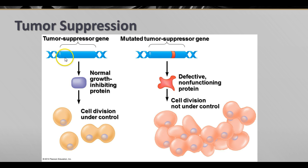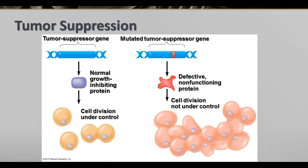Here's how a tumor suppressor gene works: you have a gene that produces a protein for normal growth inhibition, and by suppressing the tumor, you end up with cell division that's under control. If there's a mutation in that gene — a change in the DNA sequence — a different, non-functioning protein is formed because it's not the right size or shape. Therefore, it won't turn off cell division like P53 does, leading to cell division that's not under control and the development of cancer. A lot of work is currently being done to figure out ways to turn P53 back on or correct those mutations to stop tumors before they get started.